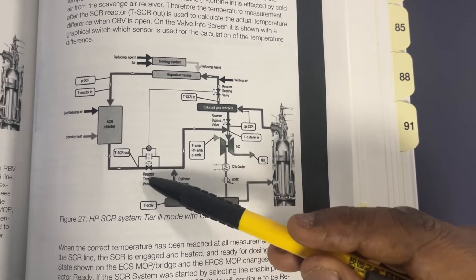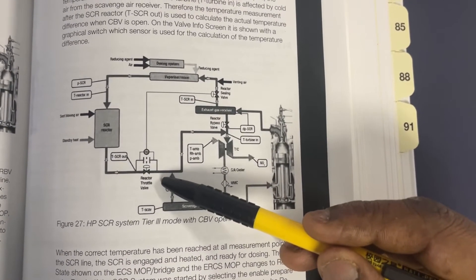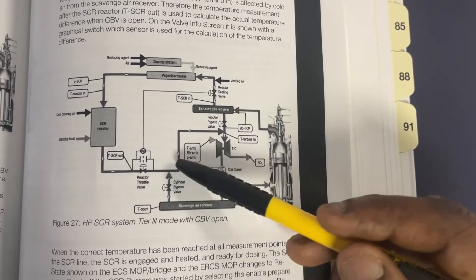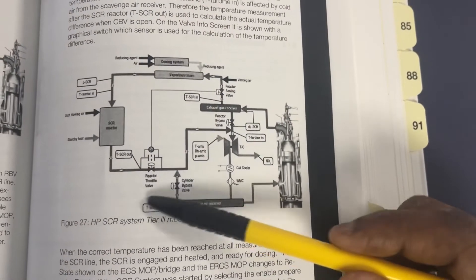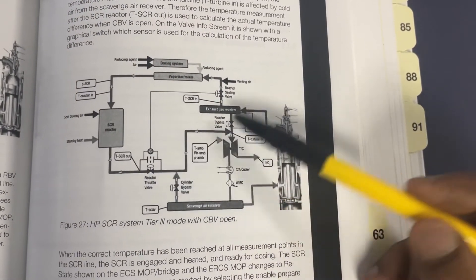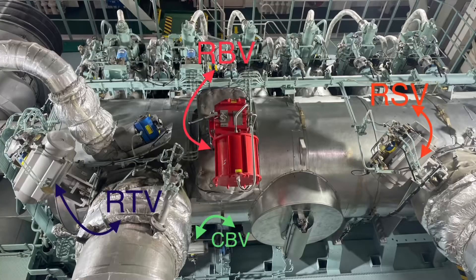The RBV and RTV have a separate C part with a volume booster. It is designed in a way that only one valve control is possible at any given time. The RTV will open first, and then RBV will start closing.